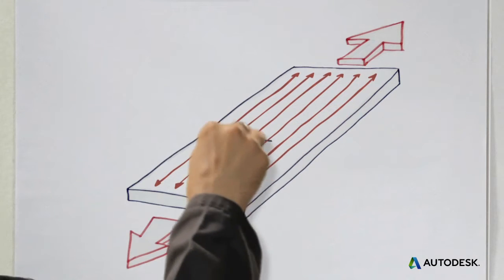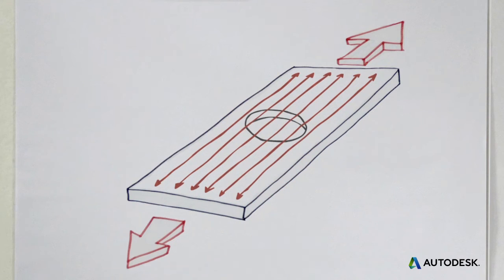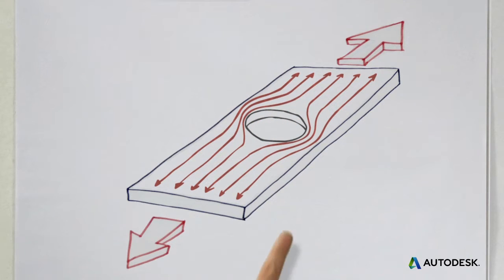Now, let's get fancy and see what happens when we cut out a hole. The area in the middle can't support any forces anymore, so they have to go around. The force lines are denser in the material around the hole, and the stresses there are higher.